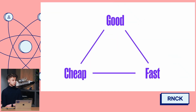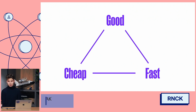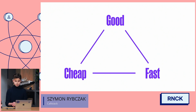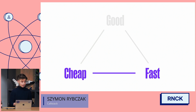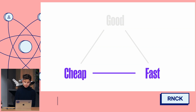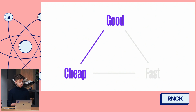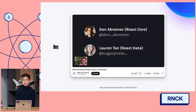In software development there is this principle that you can make something that is good, fast, or cheap — but you can only pick two. You can make something good and fast, but not cheap. Or fast and cheap, but not good. Or good and cheap, but not fast. That's how Dan Abramov started his talk presenting the idea of React Server Components.